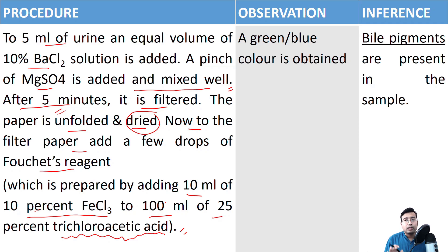So what will be the observation? If bile pigments are present in the sample, a greenish-blue, bluish-green, green-blue, all these combinations can be obtained. Remember, you will get only one. So please write only one. Don't write this either green slash blue in your practical notebook. You will get only one and you should write that only.